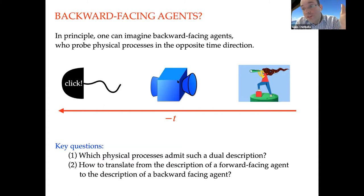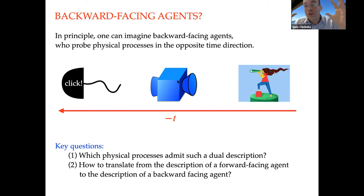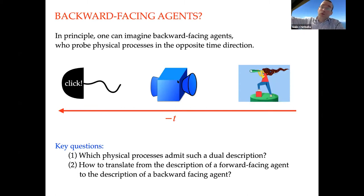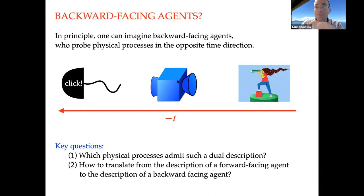In principle it's natural to imagine this is possible because it's just ordinary quantum theory with past and future flipped. But there are interesting questions. The first is: which physical processes are compatible with this dual description — which processes can respond well to both pre-selections and post-selections? The second is: how do we translate from descriptions made by forward-facing agents to descriptions made by backward-facing agents?